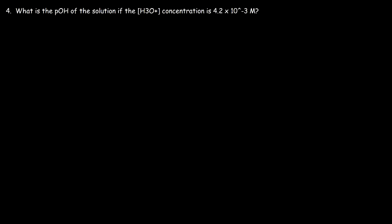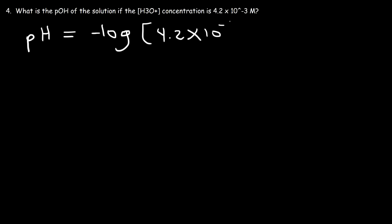Number 4. What is the pOH of the solution if the H3O+ concentration is 4.2 times 10 to the minus 3? Go ahead and pause the video and try this. The first thing I recommend is calculating the pH, which is the negative log of the hydronium concentration — negative log of 4.2 times 10 to the minus 3. Looking at this number, we know the pH is going to be somewhere between 2 and 3. Typing that in gives us a pH of 2.377.